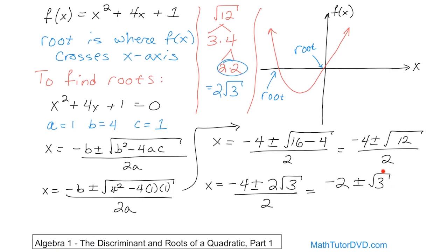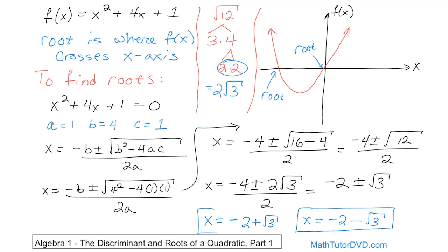So you get negative 2 plus or minus square root of 3 — because you just divide each term by 2. Notice there are two solutions here because you have a plus and you have a minus. The first one is x equals negative 2 plus the square root of 3, and the second one is x equals negative 2 minus the square root of 3. These are the two solutions — the roots of this polynomial. When you hear the word roots, it means the solutions when you set it equal to zero.